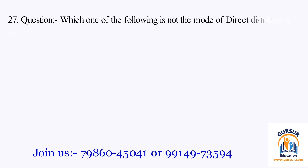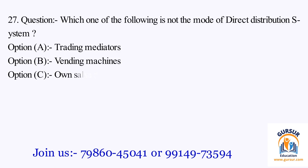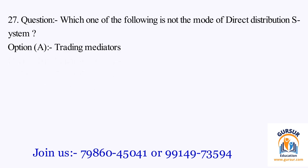Question number 27. Which one of the following is not the mode of direct distribution system? Option A: trading mediators. Option B: vending machines. Option C: own sales depot. Option D: franchise shops. The right answer is Option A, that is trading mediators.